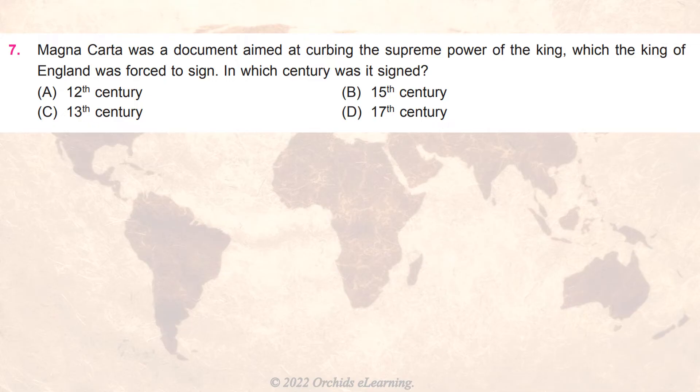Magna Carta was a document aimed at curbing the supreme power of the king, which the king of England was forced to sign. In which century was it signed?